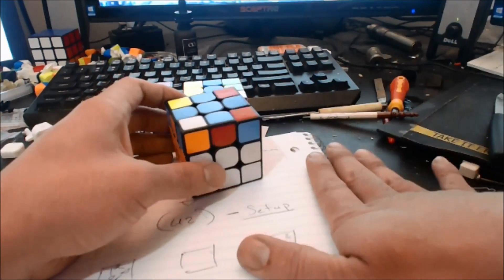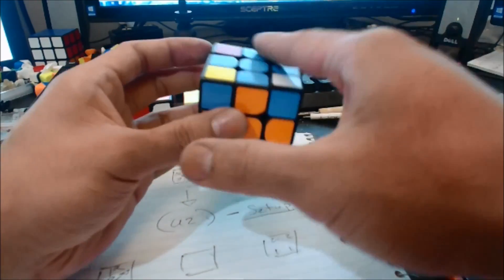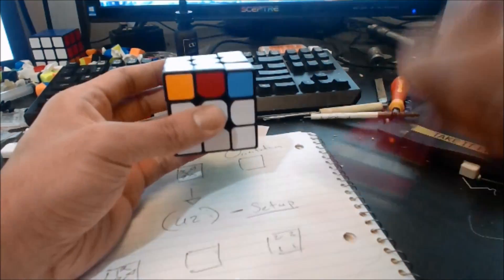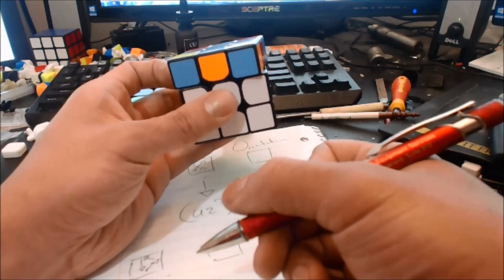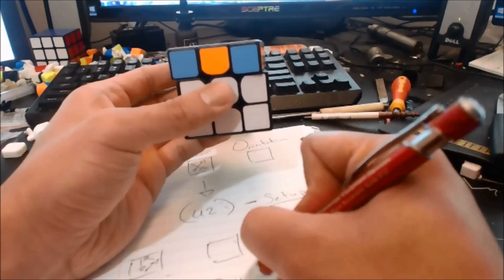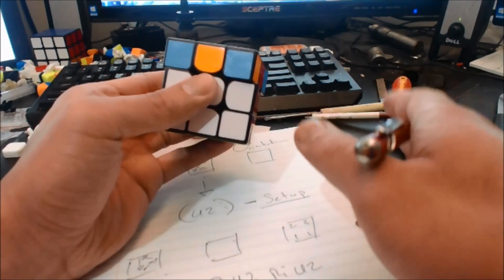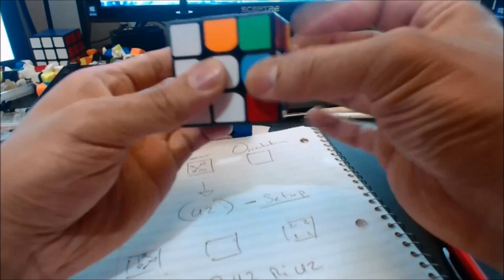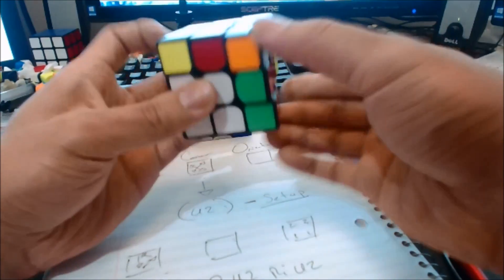I actually forgot a lot of ZBLL—I used to know all of ZBLL—but this is a 2 GLL. We have the U perm. Now I think this one is U prime and then you do like R U2 R prime U2, and then you split the pair into a triggle, into a trigger, and then you do U2 and then you do the trigger back in. So yeah, and then you split this pair and then you set up the trigger and then you do that.